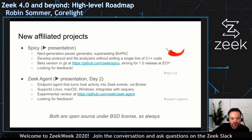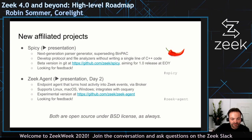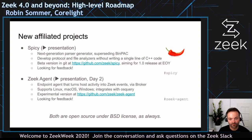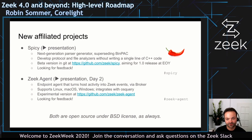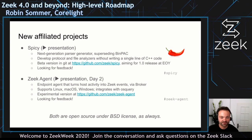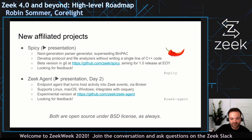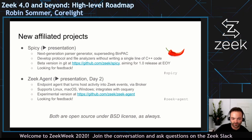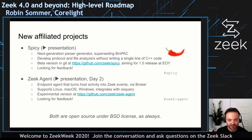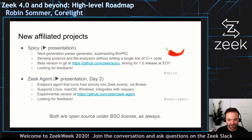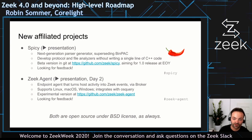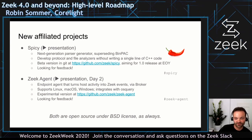Outside of the main codebase, there are two new affiliated projects. One is SPICY, which is a new C++ parser generator for parsing protocols and files, and is meant to eventually replace BinPAC. The punchline is that SPICY allows you to add new analyzers to Zeek without writing a single line of C++ code. This is essentially in beta at the moment, so I'm interested in feedback — people can go to the GitHub repository and give it a try. The goal is to align the first stable 1.0 release with the Zeek 4.0 release at the end of the year.